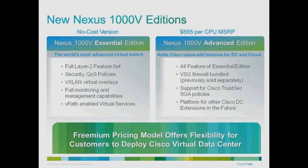The Nexus 1000v comes in two editions in version 2.1. The first is a no-cost version called the Essential Edition. The Advanced Edition will be priced at $695 per CPU MSRP, which is the same as the existing 1.x release.